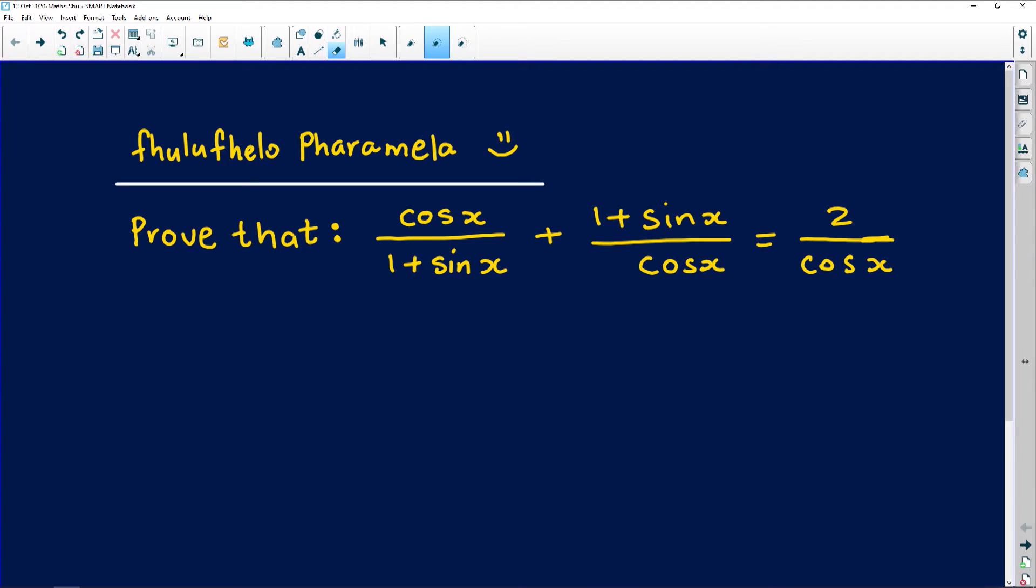Our first question comes from Pharaoh Paramela. It looks like a trig identity question. It says to us prove that cos x divided by 1 plus sin x, plus 1 plus sin x over cos x, is equal to 2 over cos x. So how does the identity basically work?